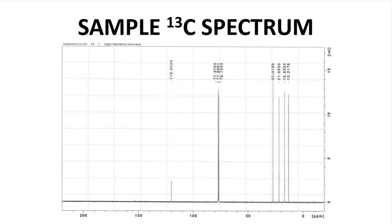Here is a sample C13 spectrum. The baseline is more jagged — it may just look like a thicker line than the proton spectrum, but the thickness of that line is from the high noise level in the baseline. It's not terrible, but a bit rough. This is part of the charm of C13 NMR spectroscopy. Let's see some consequences of this relatively high noise level.